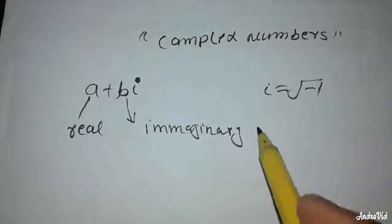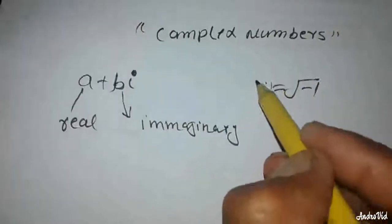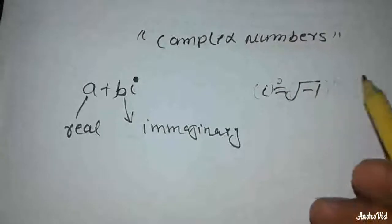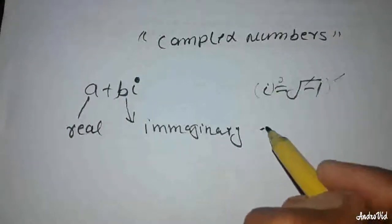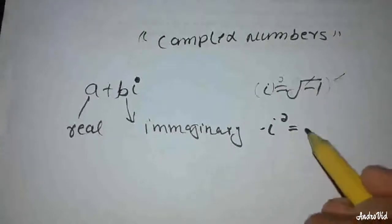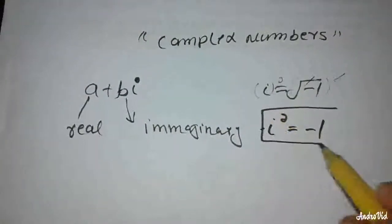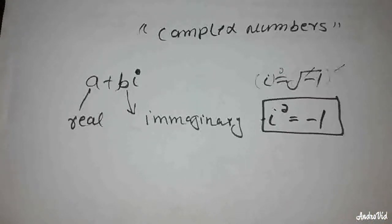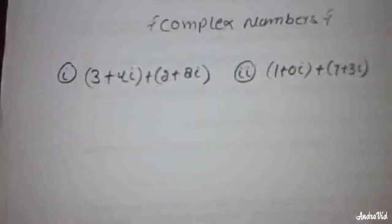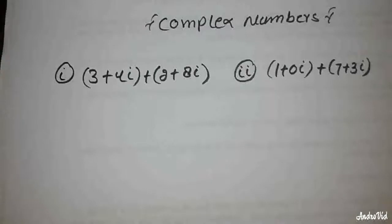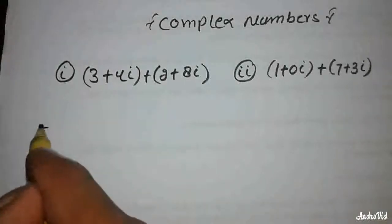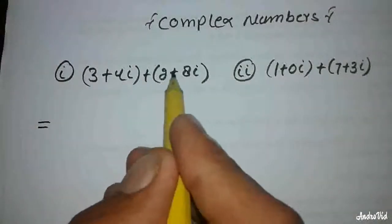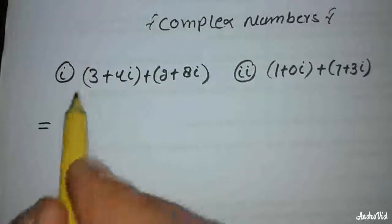The square of iota is equal to minus 1. So iota squared equals minus 1. For example: 3 plus 4 iota, plus 2 plus 8 iota — this is the addition of complex numbers.